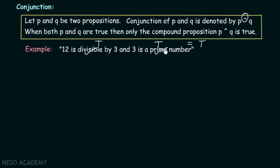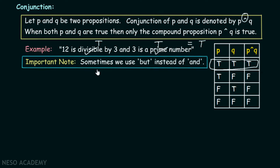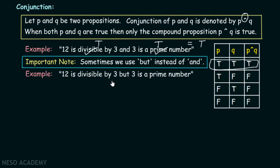For reference, here is the truth table for conjunction — true and true equals true, which is the case in our example. Please note one important point: sometimes we use 'but' instead of 'and.' For example, 'Twelve is divisible by three, but three is a prime number.' Here, 'but' is equivalent to 'and' in propositional logic. Both propositions need to be satisfied to make the compound proposition true.